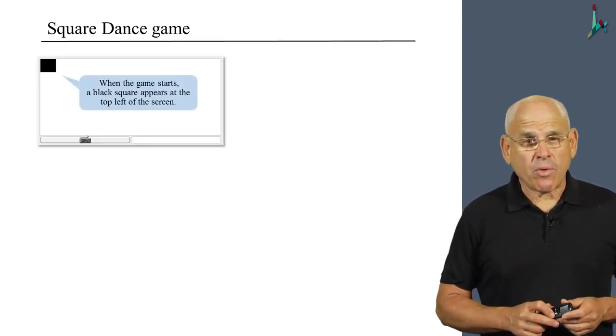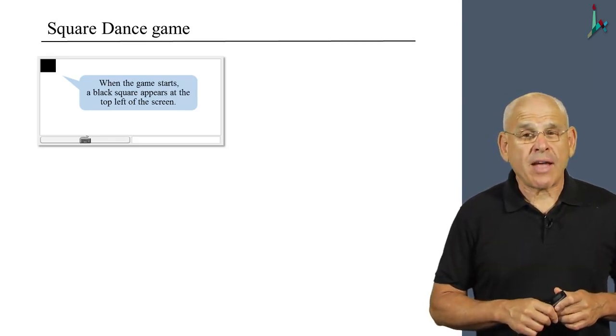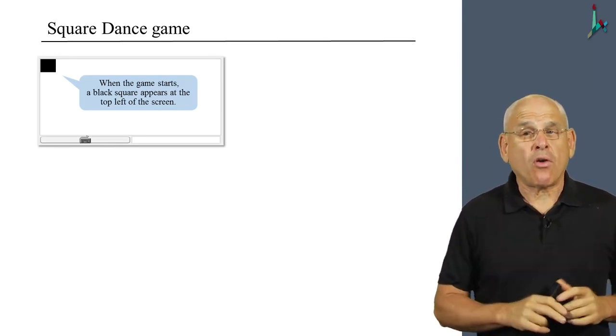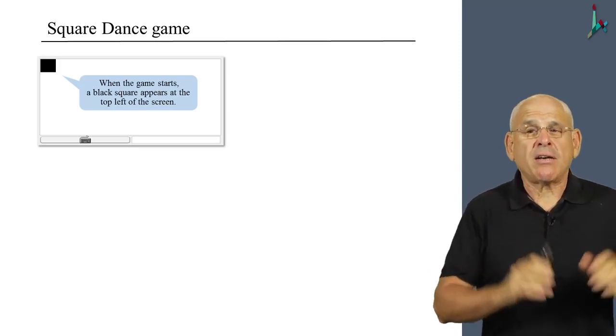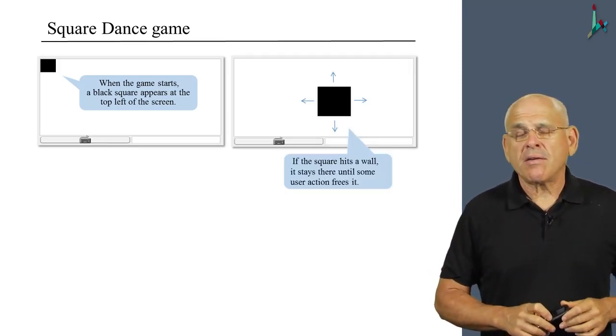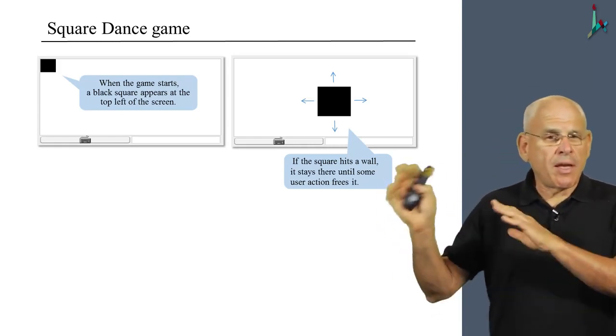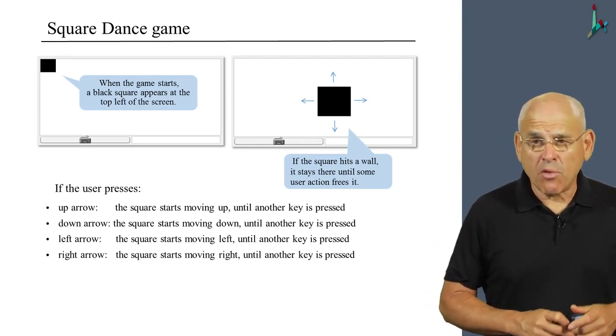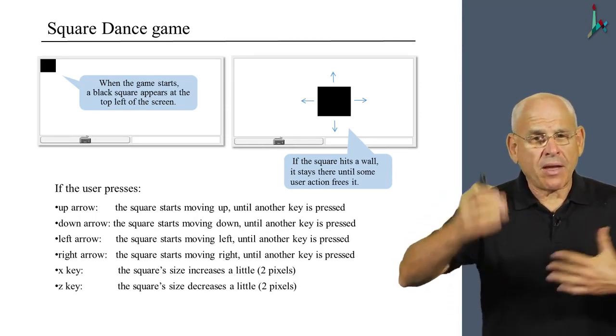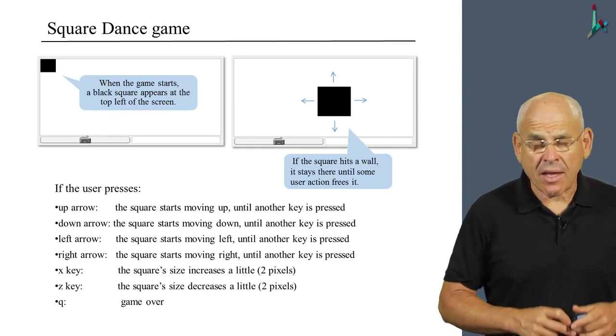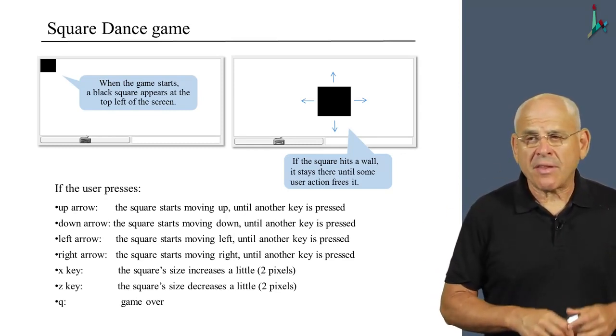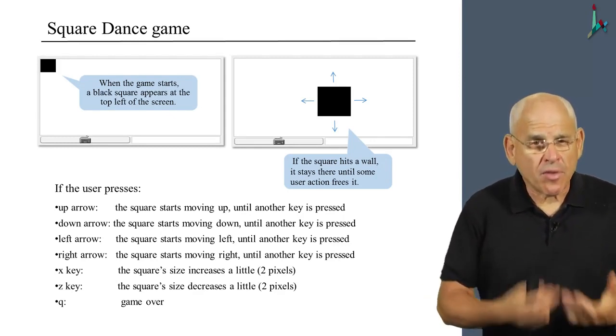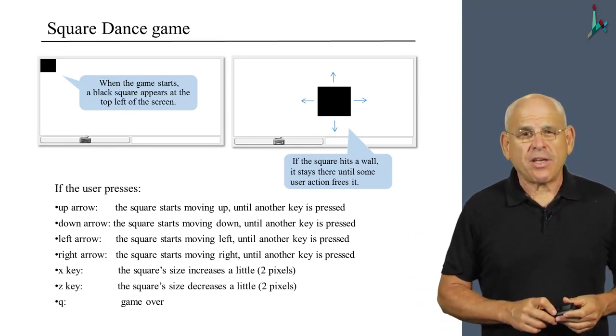To recap the demo that we just saw: when you launch the Square Dance game, the first thing that you see is a black square located in the top left corner of the screen, and the square is not going anywhere until the user does something. If the user clicks the arrow keys, the square begins to move around the screen. The user can control the movements using these four keys, make the square larger and smaller, and finally quit the game. We have to keep these things in mind when we delve into the code, because the code is designed to implement all of this action.